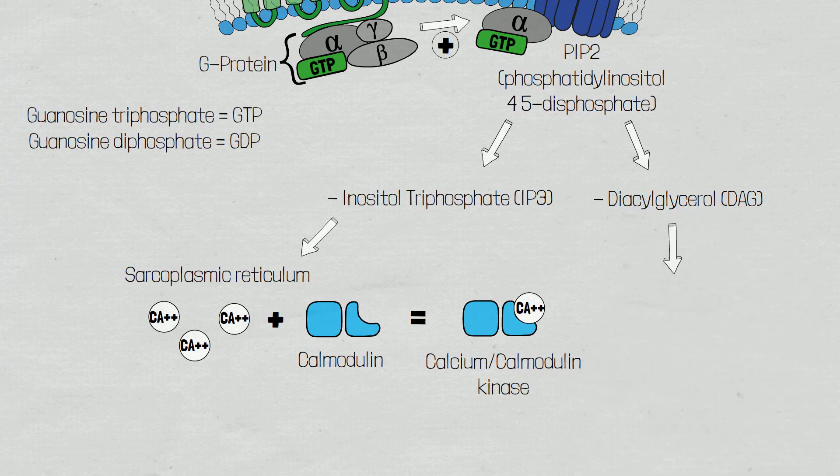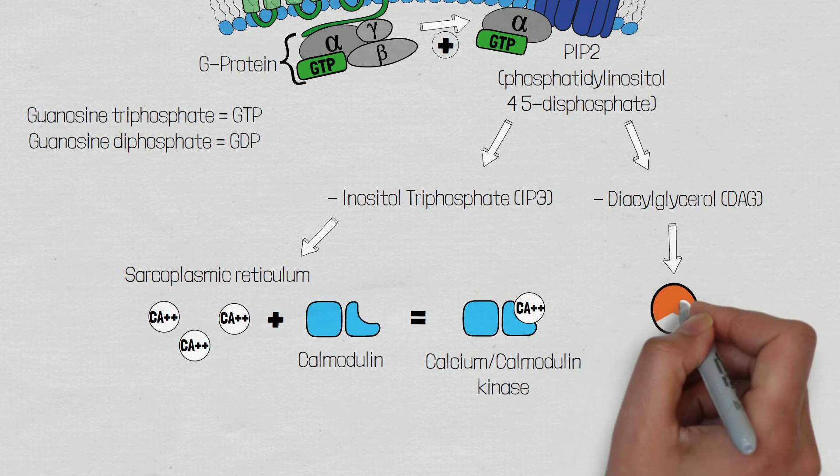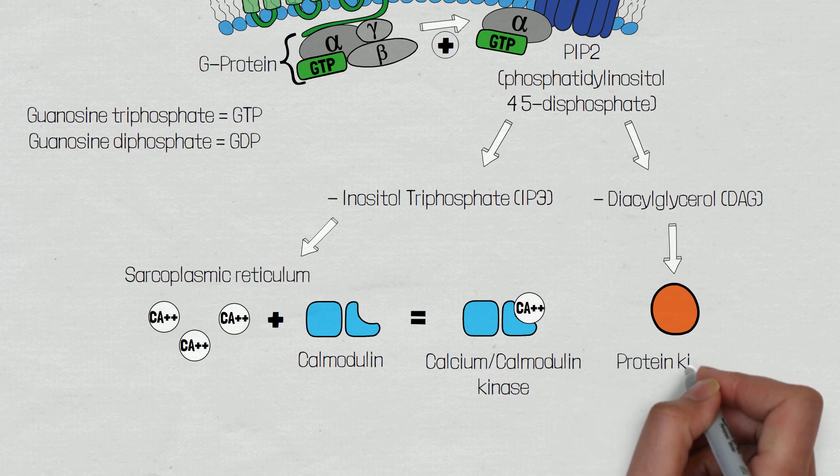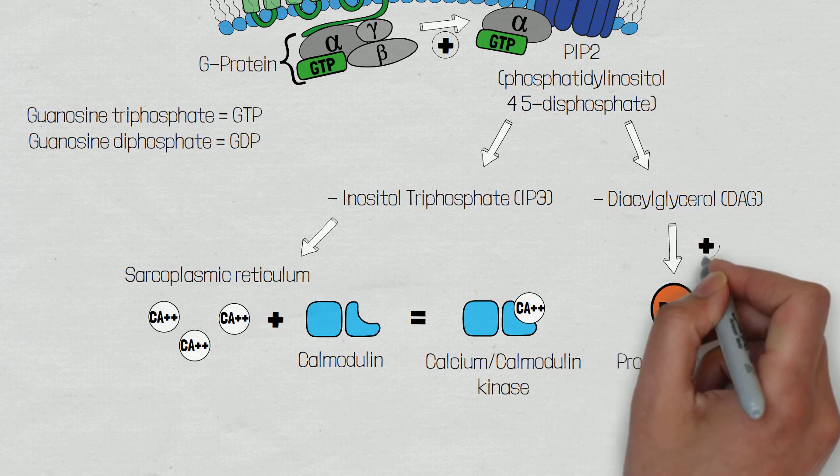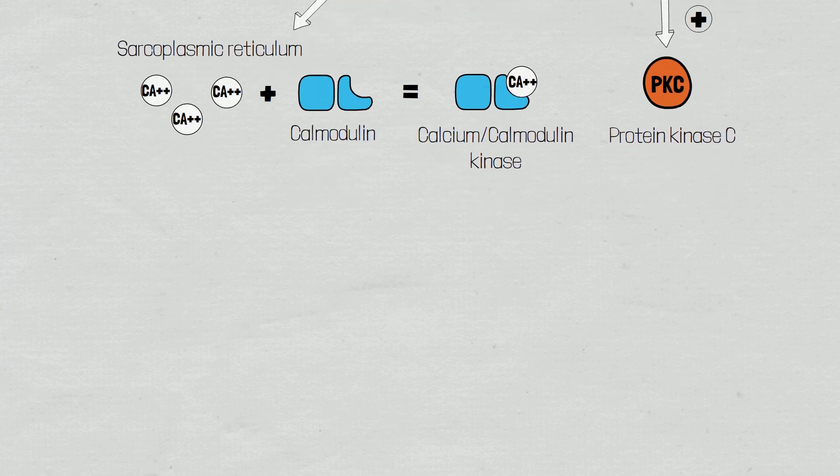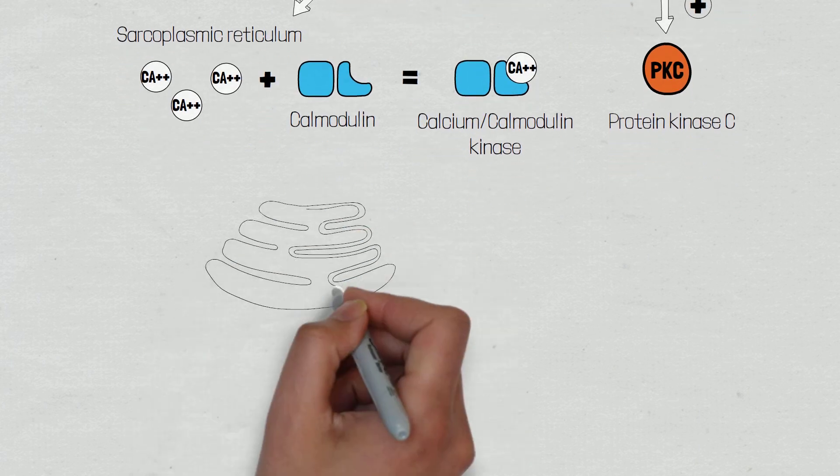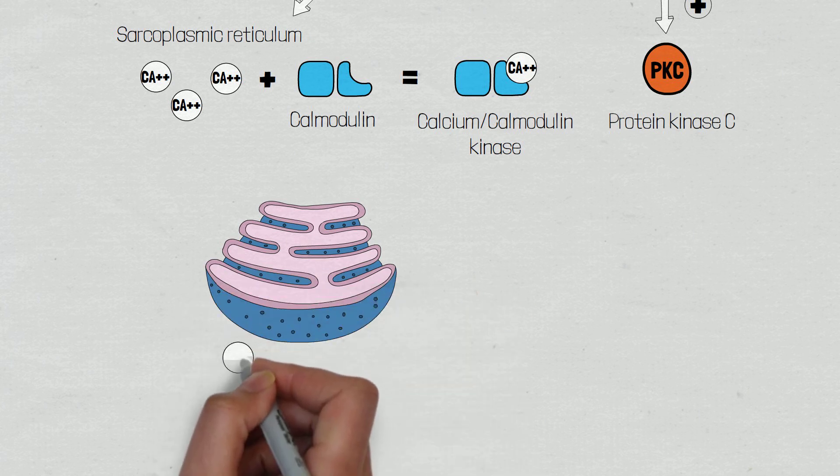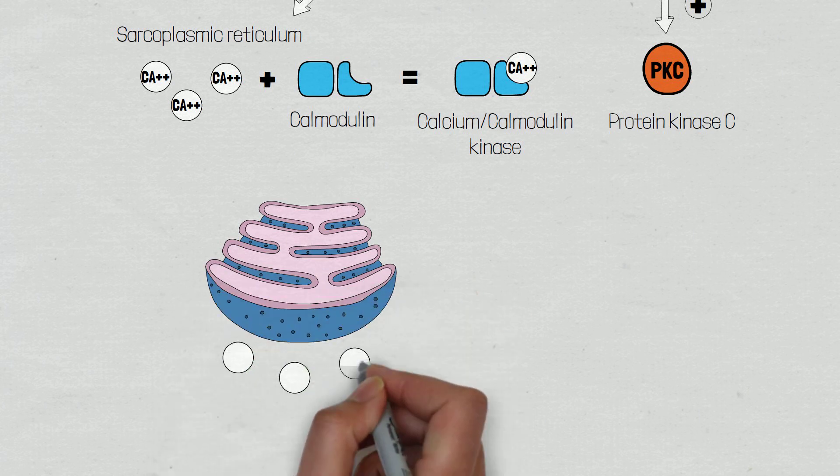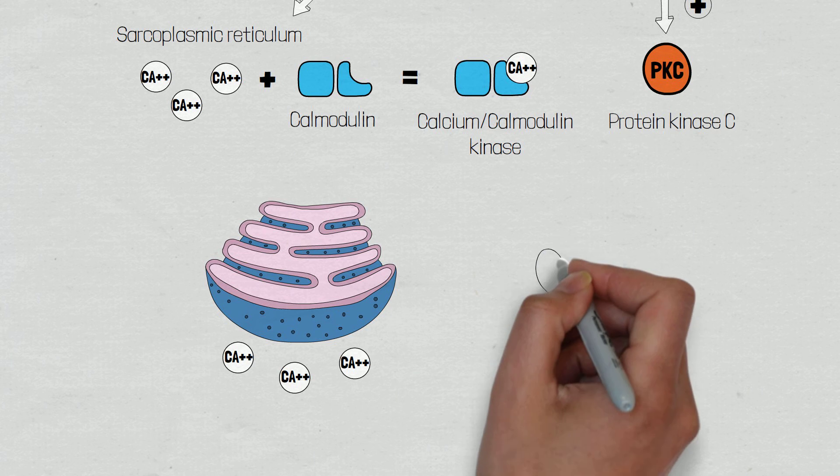The other second messenger that is produced from the breakdown of phosphatidyl inositol 4,5-diphosphate is diacylglycerol, which activates protein kinase C. The calcium calmodulin kinase and protein kinase C will cause an increase of calcium release from the sarcoplasmic reticulum as well as the opening of calcium channels on the cell membrane.